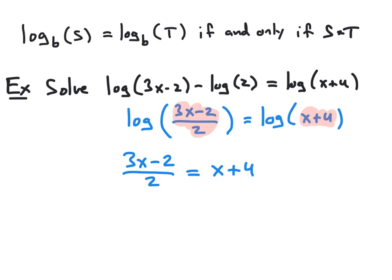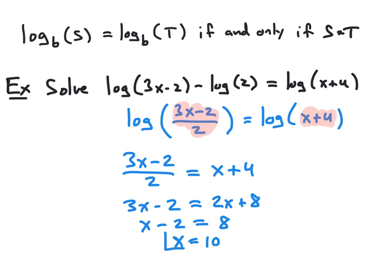We can solve this equation — it's just a linear equation. Multiplying both sides by 2 gives 3x minus 2 equals 2 times x plus 8 after distributing. Subtracting 2x from both sides gives x minus 2 equals 8, and then adding 2 to both sides gives x equals 10.